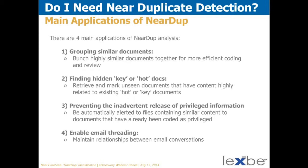Near-dupe groupings also help make review more consistent. Without near-dupe groupings, similar documents could end up with different reviewers looking at them at different times and being inconsistently coded. That can be an issue at any time — you never want bad coding on a document — but it's particularly a problem with privileged documents.